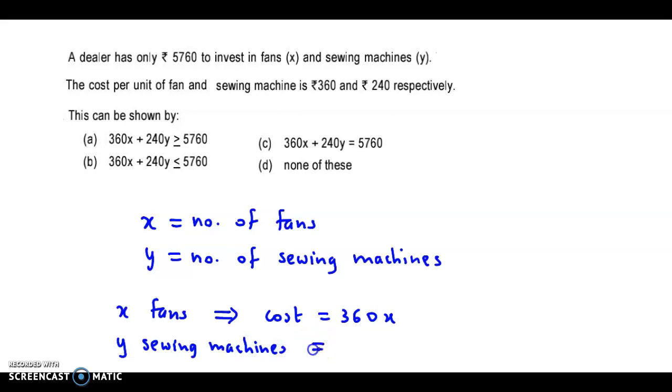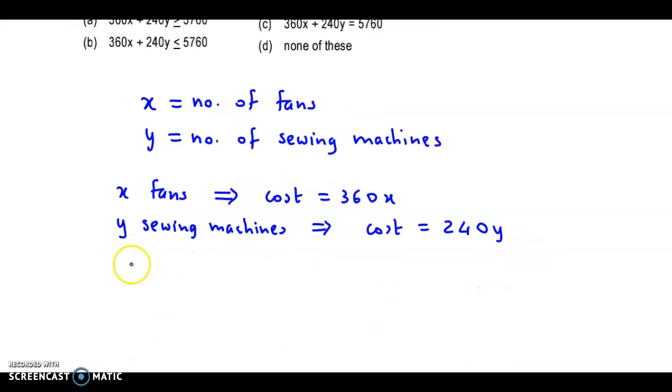For x fans, the cost would be 360x. For y sewing machines, the cost is 240y. So the total investment would be 360x plus 240y.